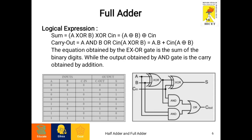For 101 inputs, C out will be 1 and sum will be 0. For 110 inputs, C out will be 1 and sum will be 0. For 111 inputs, C out will be 1 and sum will be 1.